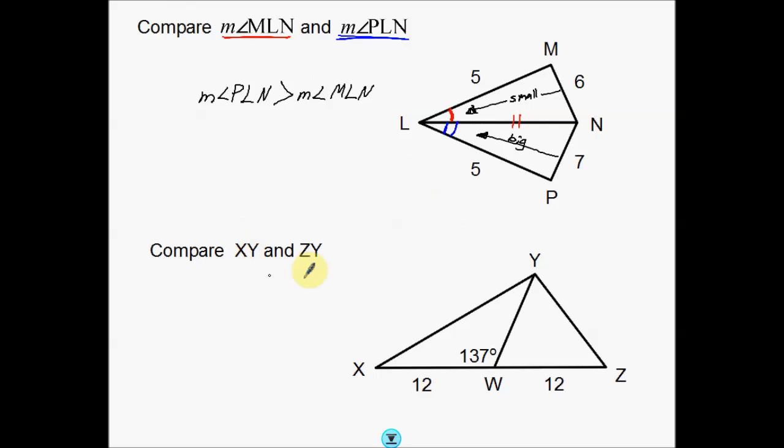Now down to the second example — we're comparing sides. XY is this side right here, and ZY is this side over here. Now as you look at this problem, if I'm comparing the length of these two sides, XY is obviously a lot bigger. But in mathematics, we have to prove everything. You can't just say that side is bigger because it looks bigger — you have to have evidence of what you're thinking.